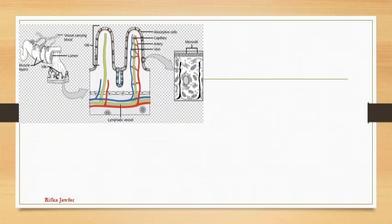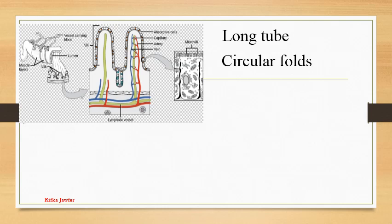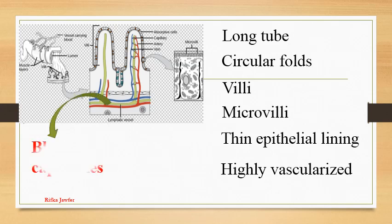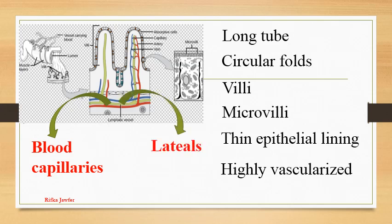Absorption mainly takes place in the small intestine. There are some adaptations for efficient absorption: the small intestine is a long tube, presence of circular folds in the wall, presence of finger-like projections called villi, presence of microvilli in epithelial cells of villi, thin epithelial lining on villi, and villi are highly vascularized. Amino acids, vitamins, mineral salts and monosaccharides are absorbed into blood capillaries. Fatty acids and glycerol are absorbed into lacteals, and finally enter the blood circulatory system.